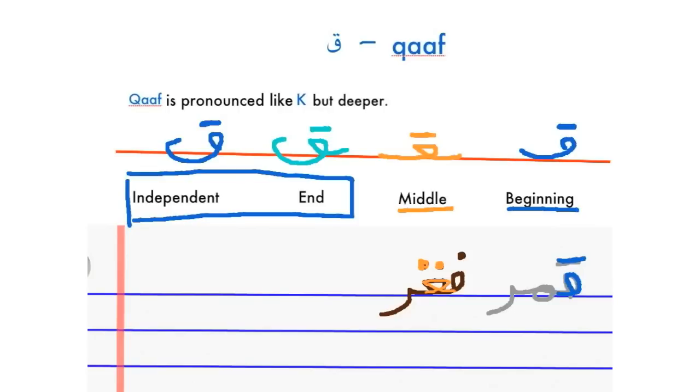As we explained earlier, we can write two dots with the bar or with two separate dots because we are using handwriting.